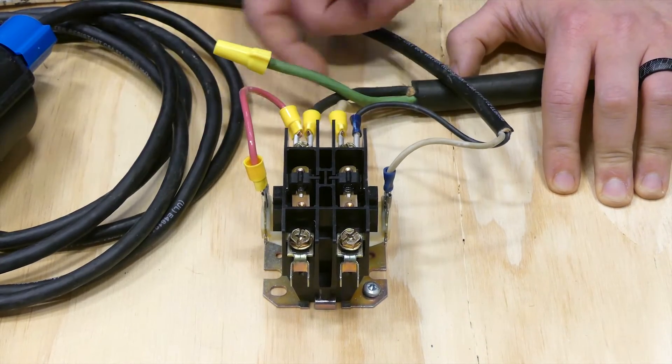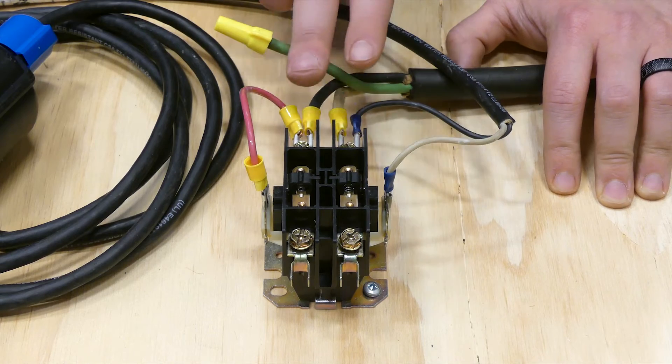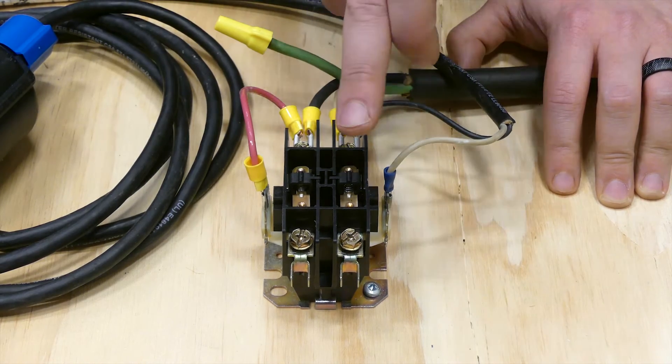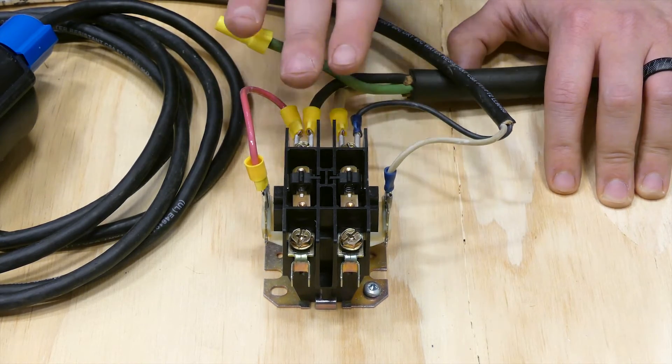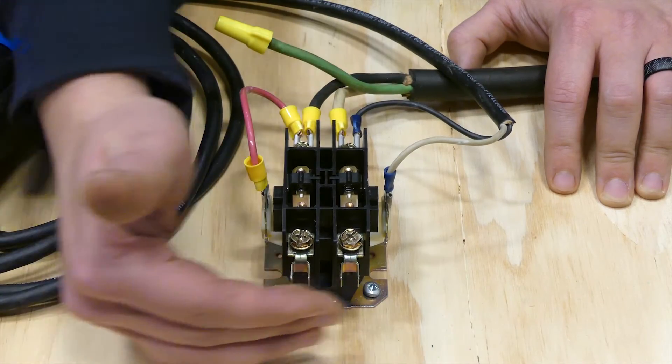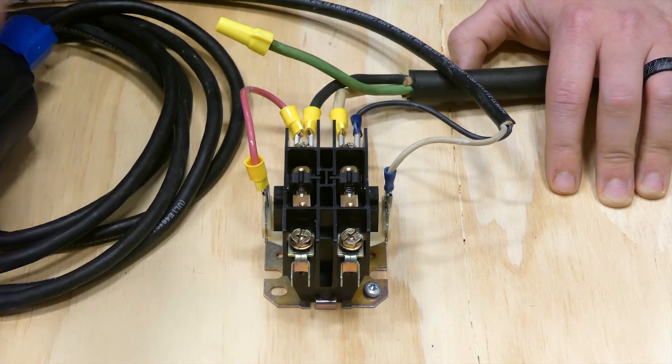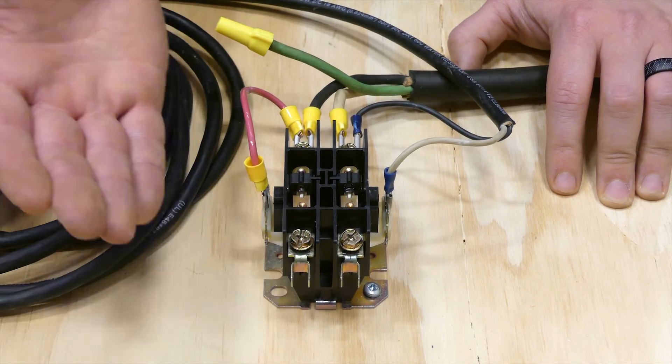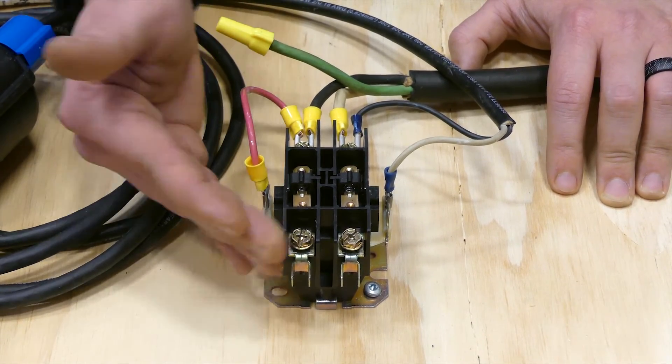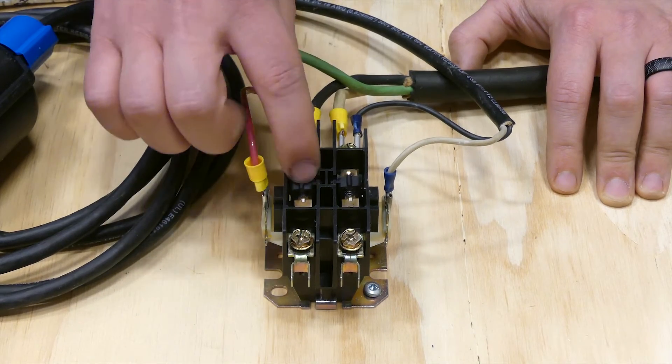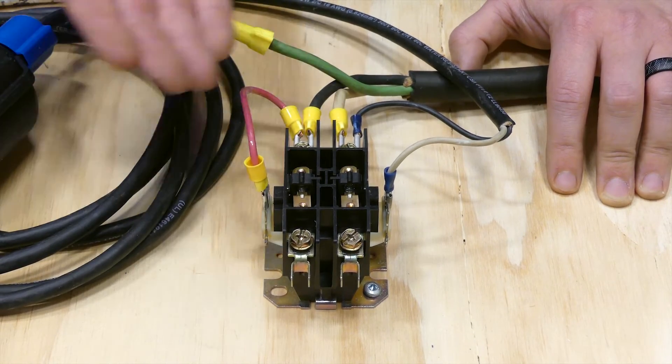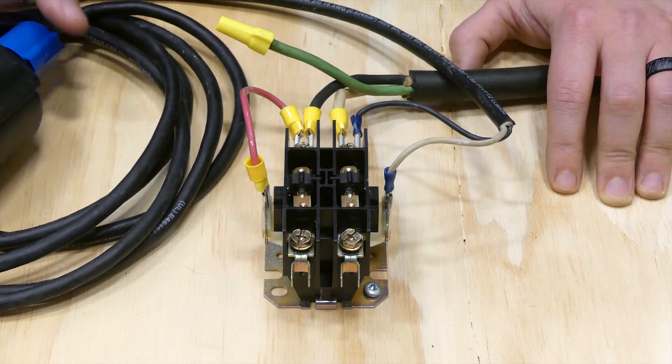So just final thoughts on the contactor configuration here. Of course I mentioned the incoming power going here, and once that contactor pulls in it is sending power out through the bottom here. And that's where typically it's going to feed into your pump system, whether it be a control box or feeding directly to the pump.